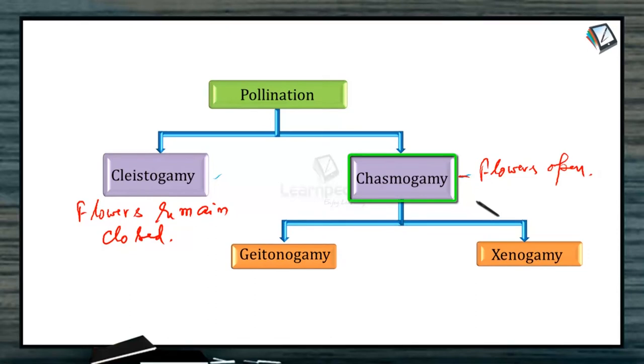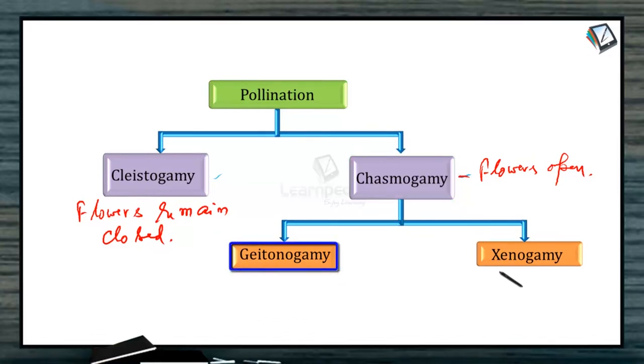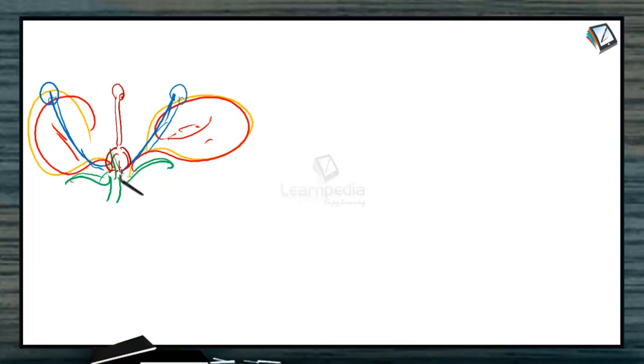In chasmogamy, the male and female sex organs are exposed. Again, there are two types under chasmogamy. The flower has calyx and corolla, the perianth parts. At maturity, the flower opens, exposing the sex organs and the gynoecia. These are chasmogamous flowers, and they may be bisexual or unisexual.